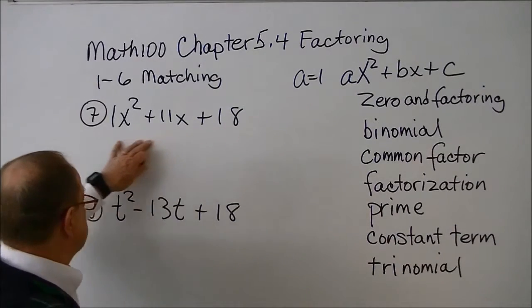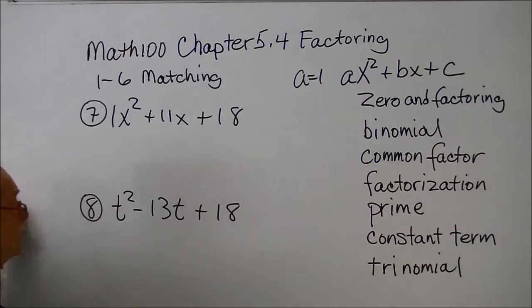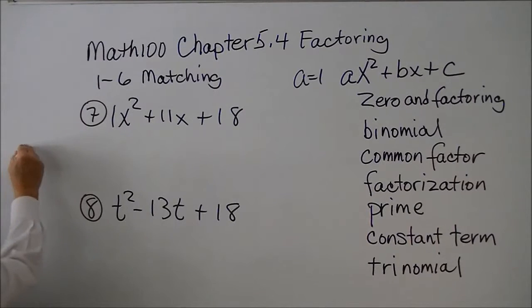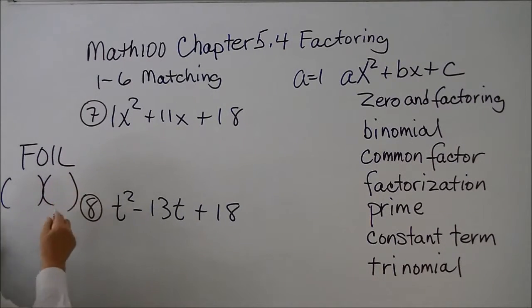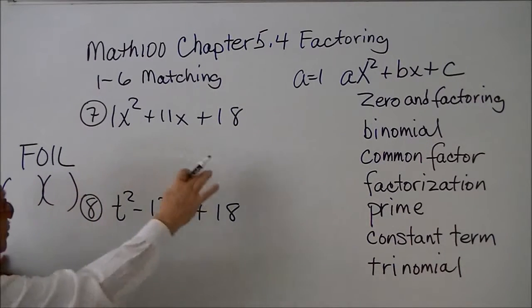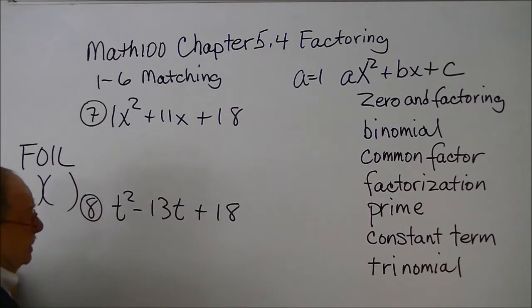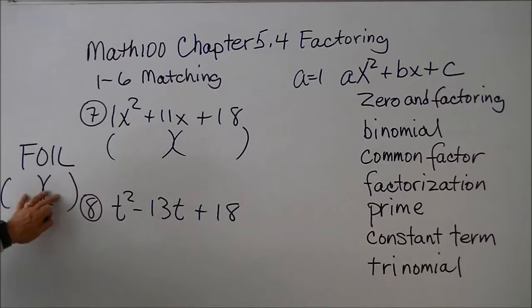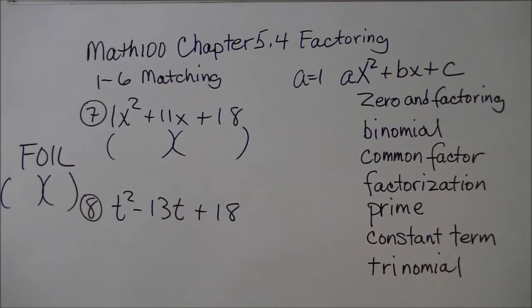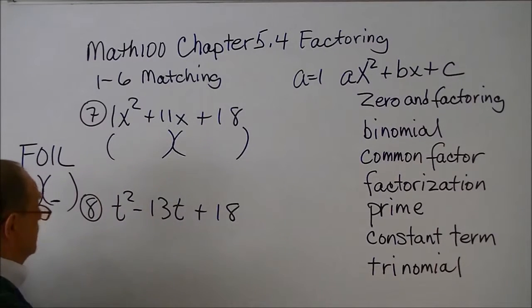You might say, how did we get to this trinomial? If you recall, in previous sections we FOILed — we had two binomials that we FOILed, and that gave us this trinomial. So as we develop a strategy to factor this trinomial, the first thing we do is see if there's any common factor in each term. There isn't any, so our second step is to put two sets of parentheses, going back to our FOIL.